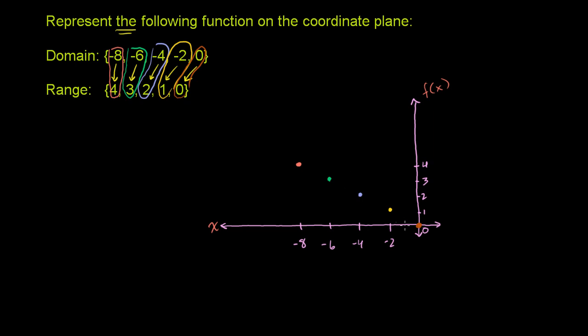So that's the function, I've represented it. Remember, I assumed that negative 8 maps to 4, negative 6 maps to 3. But you could have multiple functions with this domain and range. Just the way they said the following function, I'm assuming this is what they want us to do.